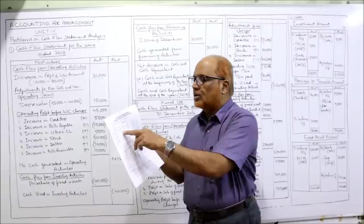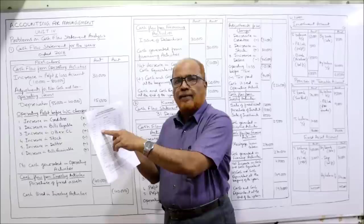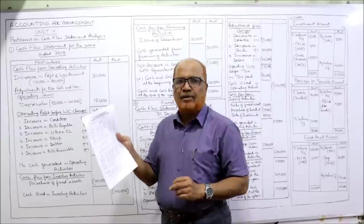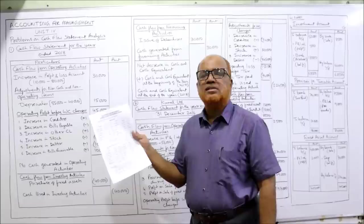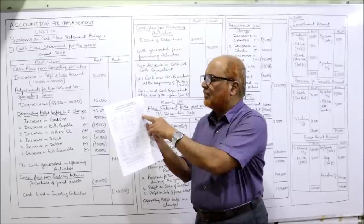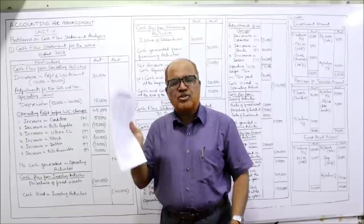Profit and loss account: last year 80,000, current year 1,10,000 — increase of 30,000. Then debentures: last year nil, current year 30,000. Creditors, bills payable, other current liabilities on the liabilities side. On the asset side, gross block representing fixed assets, then less accumulated depreciation — last year 40,000, current year 55,000. Then stock, debtors, bills receivable, and cash. This is the complete balance sheet given.